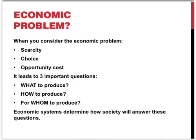In the first part of this chapter, we said that when you consider the economic problem of scarcity, choice, and opportunity cost, this leads to three important questions: what, how, and for whom to produce? This section is specifically on the question of how to produce.